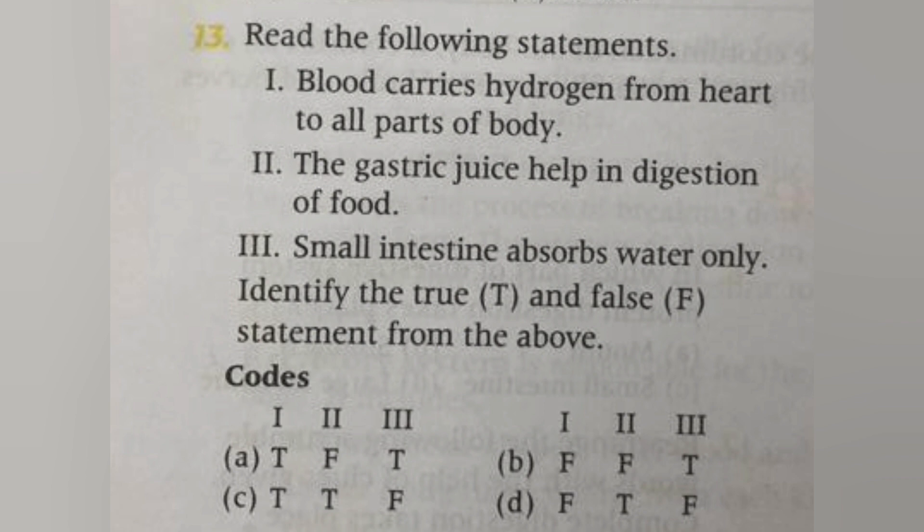Next, read the following statements. First: blood carries oxygen from the heart to all parts of the body. Second: gastric juice helps the digestion of food. Third: small intestine absorbs water only. Identify the true (T) and false (F) statements. The answer is D. The first statement is false, the second is true, and the third is also false.